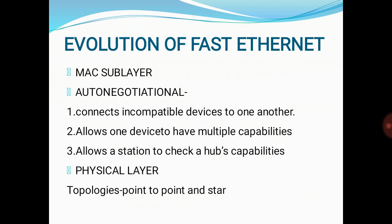A new feature added to Fast Ethernet is called auto negotiation. It allows a station or a hub a range of capabilities. Auto negotiation allows two devices to negotiate the mode or data rate of operation. It connects incompatible devices to one another, allows one device to have multiple capabilities, and allows a station to check a hub's capabilities.